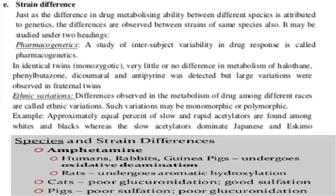Regarding strain differences, just as differences in drug metabolizing ability exist between different species, differences are also observed between strains of the same species. This can be studied under two headings. One is pharmacogenetics, which is the study of inter-subject variability in drug response.